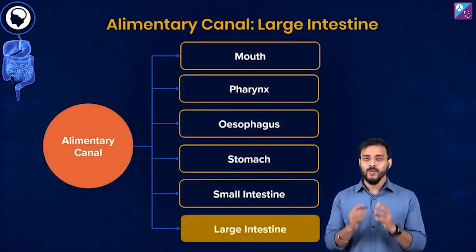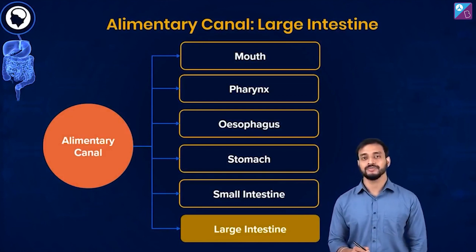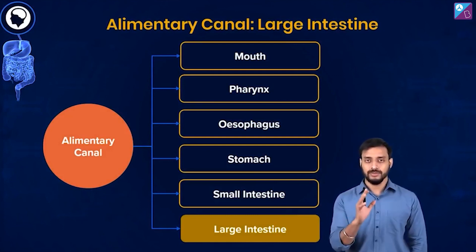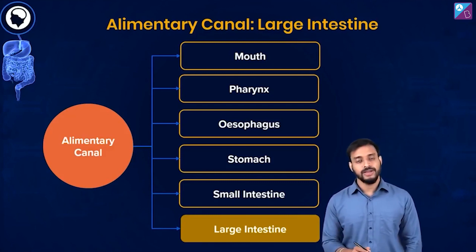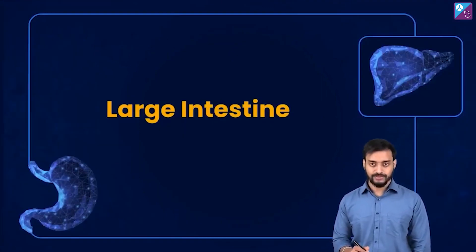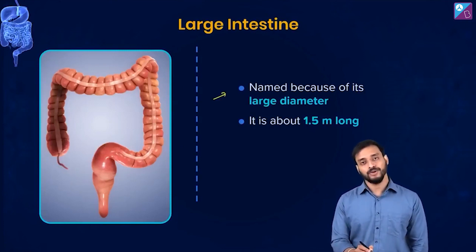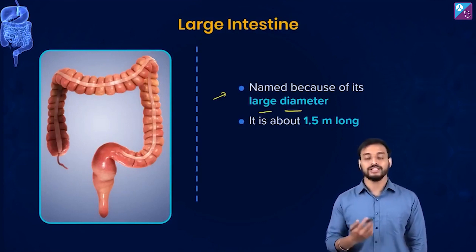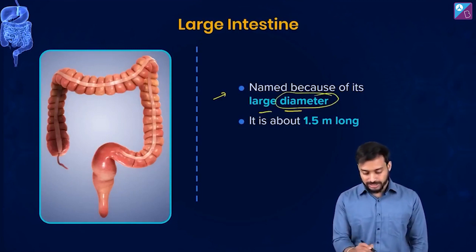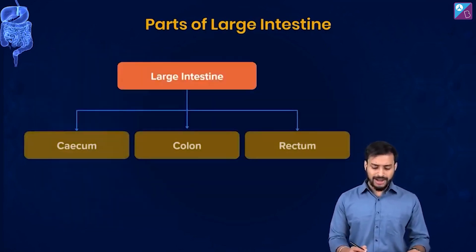Let's talk about the large intestine. What are its functions? First, why is it called 'large'? It's large not because of its length but because of its diameter. It's about 1.5 meters long — shorter than the small intestine — but its diameter is larger than the small intestine. Hence the name large intestine.